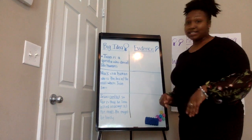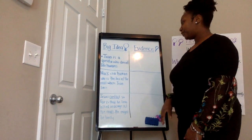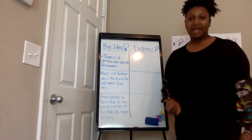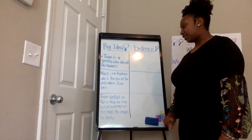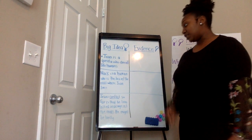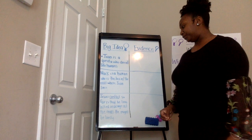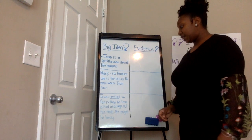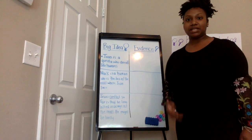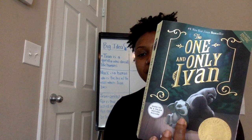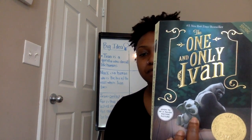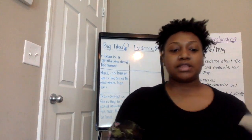Ivan is a gorilla who doesn't like humans. Mac is a human who's the boss at the mall where Ivan lives. Ivan's conflict so far is that he lives locked up in a cage at the mall and he might be lonely. The story we're reading today is called The One and Only Ivan. You can open the PDF file just like Charlotte's Web and click View Original to see the story.